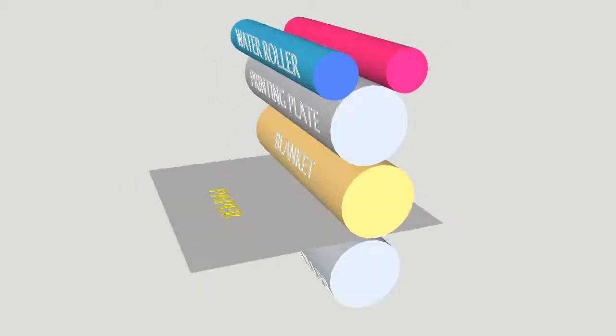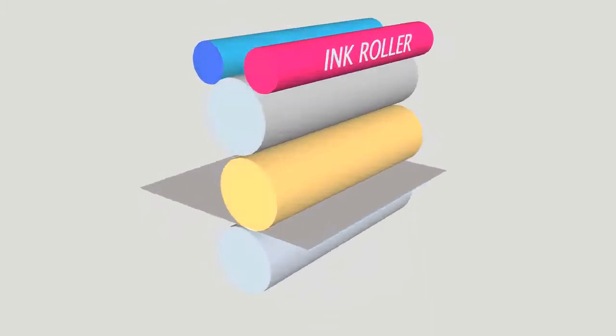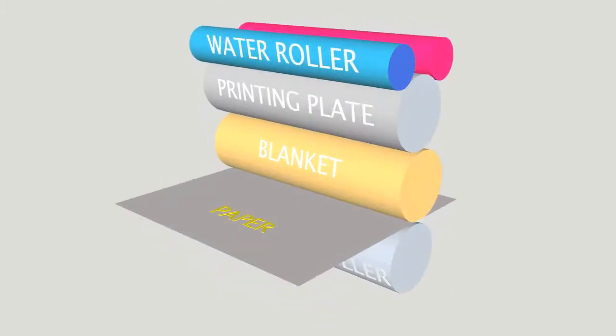At the top we have two rollers, a water roller and an ink roller. The oil-based ink sticks to the hydrophobic areas of the printing plate but is washed off from the hydrophilic areas that haven't been etched by the plate machine.